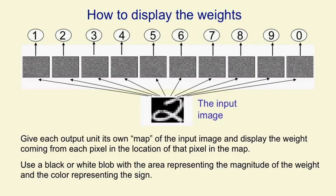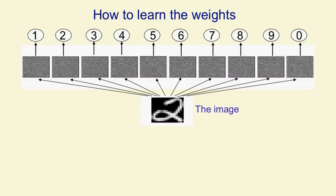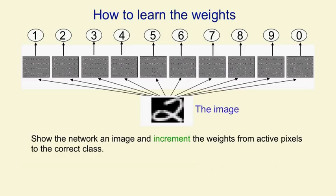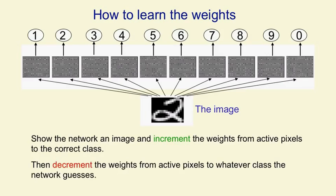Now what we're going to do is show that network some data and get it to learn weights that are better than the random weights. The way we're going to learn is: when we show it an image, we're going to increment the weights from the active pixels in the image to the correct class. If we just did that, the weights could only get bigger and eventually every class would get huge input whenever we showed it an image. So we need some way of keeping the weights under control — we're also going to decrement the weights from the active pixels to whatever class the network guesses. We're really training it to do the right thing rather than the thing it currently has a tendency to do. If it does the right thing, the increments made in the first step will exactly cancel the decrements, so nothing will change, which is what we want.